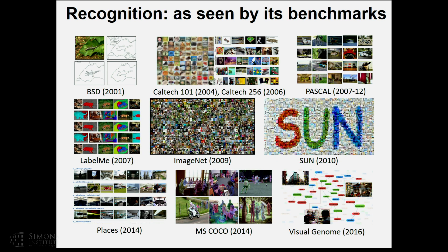One way to look at what we're trying to do is to examine the benchmark datasets that feed the algorithms to learn how to do different recognition tasks. One that has driven a great deal of progress is the ImageNet dataset, where given a million or more exemplars, we can train recognition systems to categorize objects into a thousand different categories. There's been tremendous progress in the last five years, possible in part because of large manually curated datasets, increased computation, and successes in representation learning.